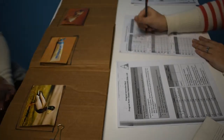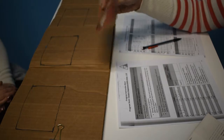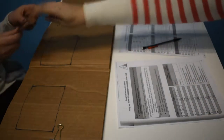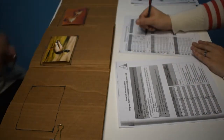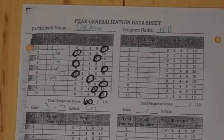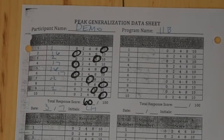Great job that time. One more. What is this? Glasses. And what is this? Duck. That was in order. Very good. Go ahead and check your scores for peak generalization picture sequence with delay 11b.